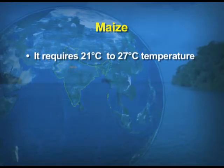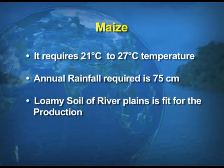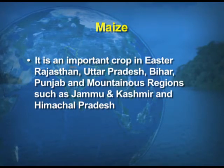Another important food crop is Maize, an important coarse grain which contains glucose and starch. The temperature best suited is 21 to 27 degrees Celsius, and rainfall required is only 75 centimeters. Loamy soil of plain areas is fit for production of Maize. It is an important crop in eastern Rajasthan, Uttar Pradesh, Bihar, Punjab, and mountainous regions such as Jammu and Kashmir and Himachal Pradesh.